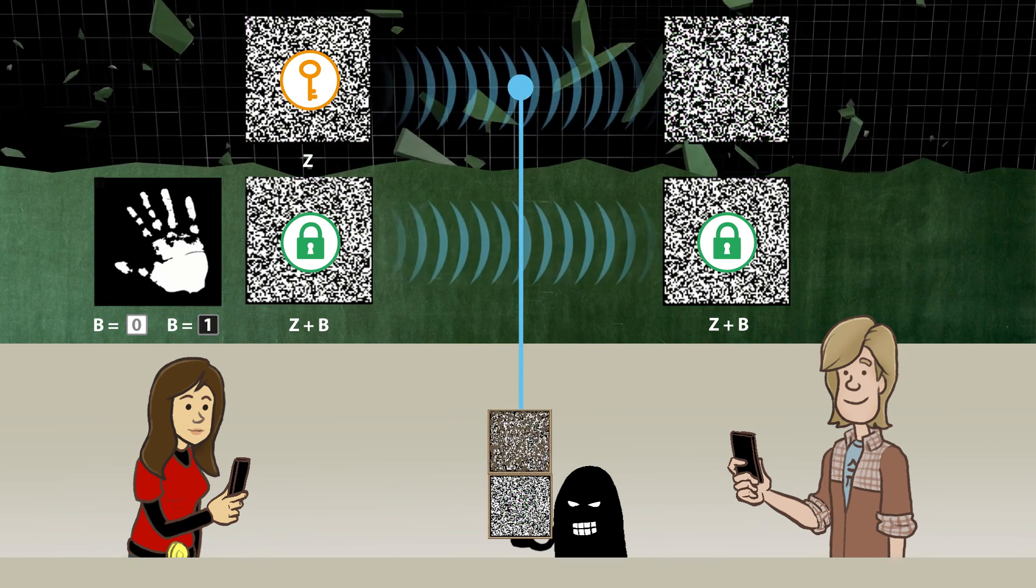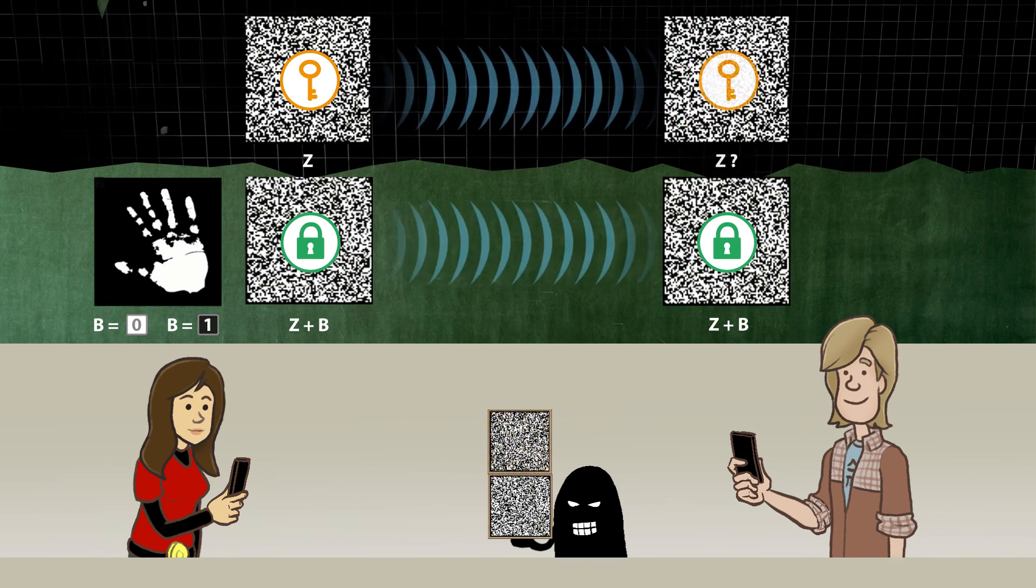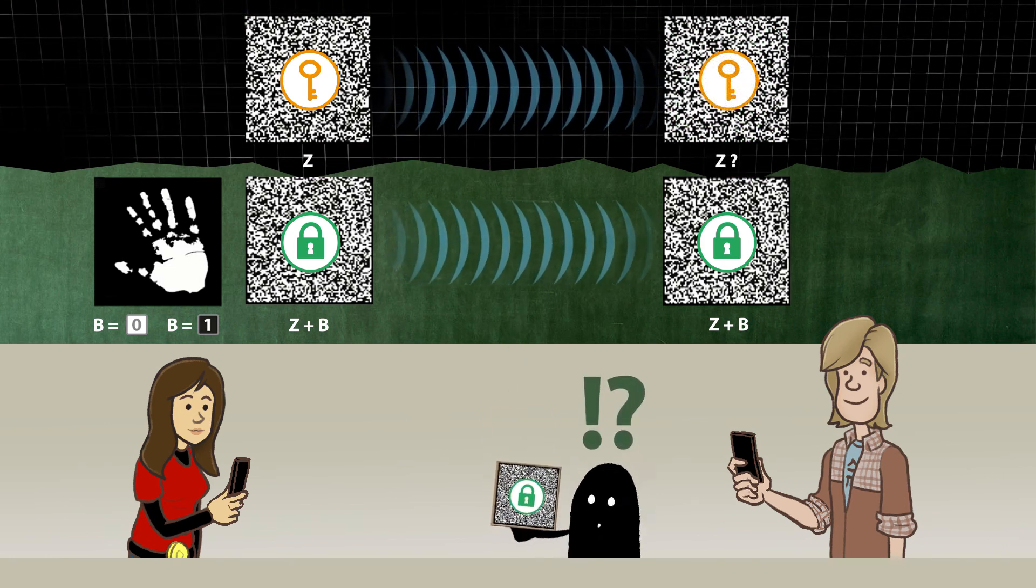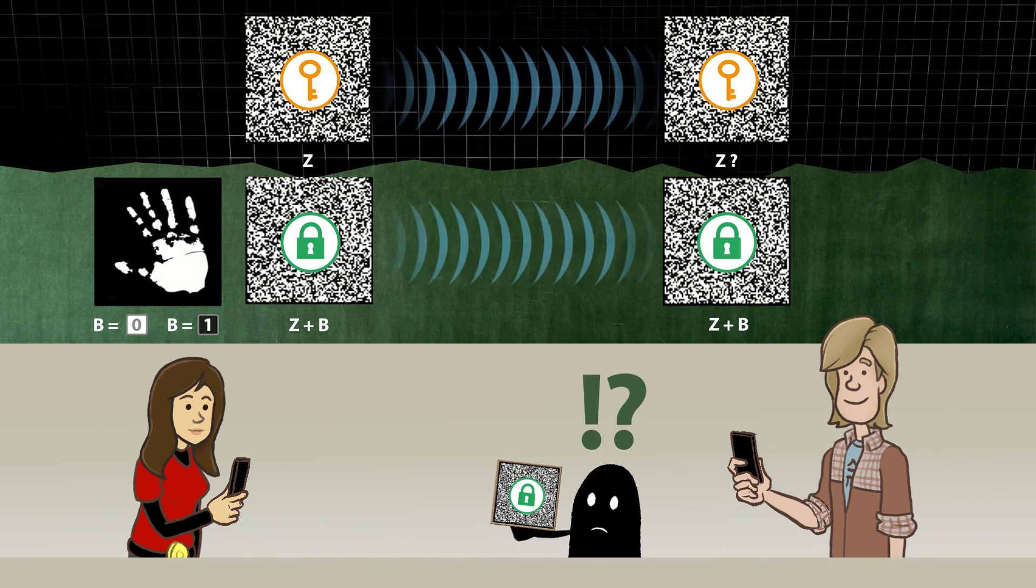However, nothing can create random patterns better than quantum physics. In the next slide we will explain how we can outsmart the spy through the quantum dimension.